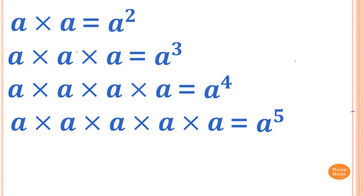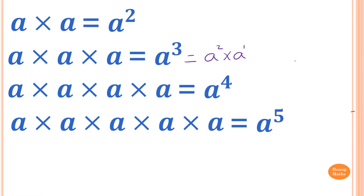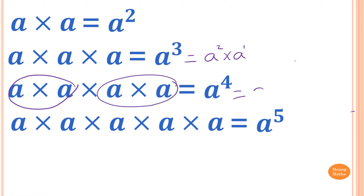Now, if you think about it, A times A is A squared. So this one is just the same as A squared times A. A can be written as A power 1. So A power 4 is the same as A squared times A squared. A times A is A squared, so it's the same as A squared times A squared.